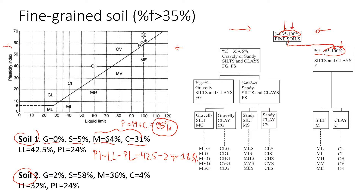To determine whether the soil is silt or clay, we don't look at the amount of silt and clay particles — we look at the plasticity. Using the plasticity chart, the liquid limit is 42.5 and the plasticity index is 18.5. We can see that this point is above the A-line, which means we are dealing with clay.